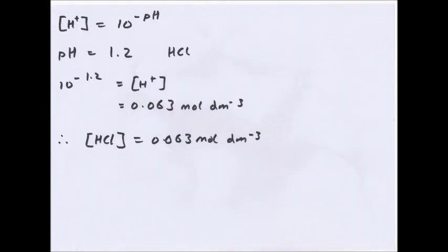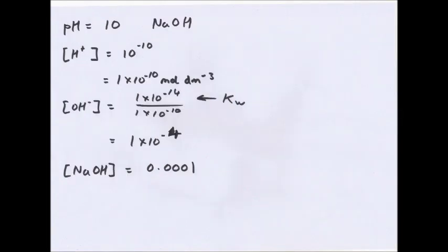To find concentration from pH: [H+] = 10^(−pH). So if pH = 1.2 for HCl, then 10^(−1.2) = 0.063 mol dm⁻³; since HCl is monobasic, [HCl] = 0.063 mol dm⁻³. For a base example, pH = 10 for NaOH: [H+] = 10^(−10) = 1 × 10⁻¹⁰ mol dm⁻³. Then [OH⁻] = Kw / [H+] = (1 × 10⁻¹⁴) / (1 × 10⁻¹⁰) = 1 × 10⁻⁴, so [NaOH] = 1 × 10⁻⁴ mol dm⁻³.